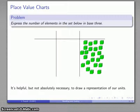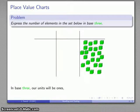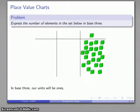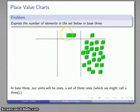It's helpful, but not absolutely necessary, to draw a representation of what our units look like. Here in my first column, my units are the single object. Because I'm working in base 3, a set of three objects is going to form the next unit. I'm going to take three of them, and that's going to be what my next unit looks like. My next unit is going to be three of these objects, so I'll take three of these, put them together, and that will form my unit in the next place.